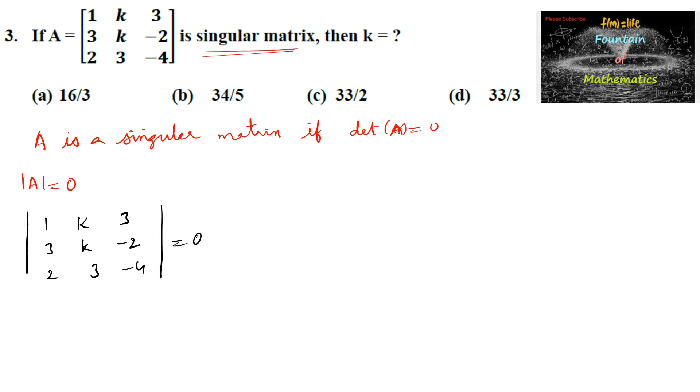equals 0. So you can write 1 times (-4k + 6) minus k times (-12 + 4) plus 3 times (9 - 2k) is equal to 0. On